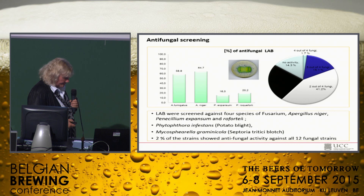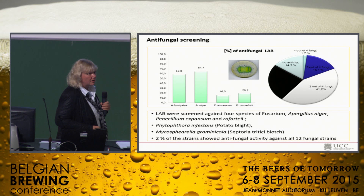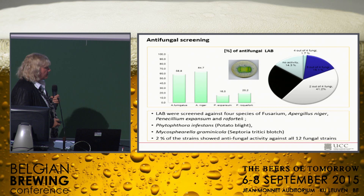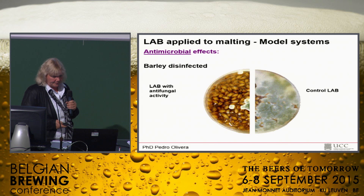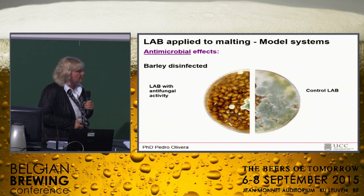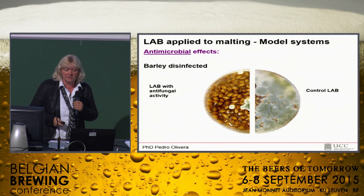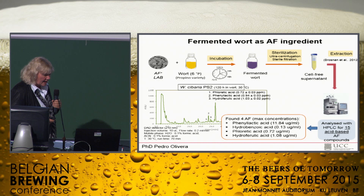Here are just the results of the antifungal screening. You can see a lot of the strains do have a certain antifungal activity, but only very few have a broad spectrum. Of the thousands we had, only about 2% of the strains were actually antifungal to a broad range of molds. We then carried out model system studies, and you can see here: treated with an antifungal LAB versus untreated — you can see how effective such a strain is.